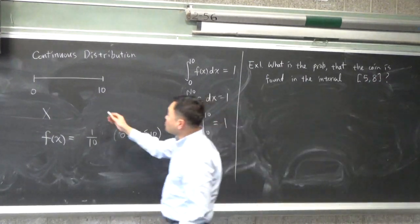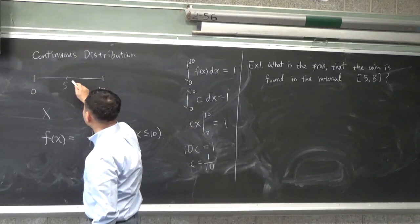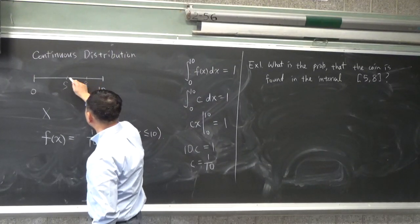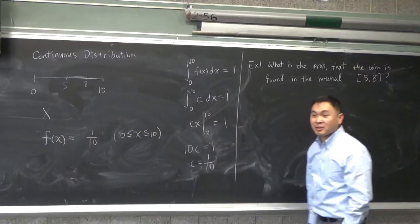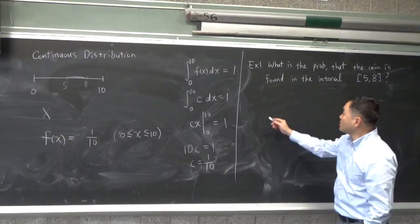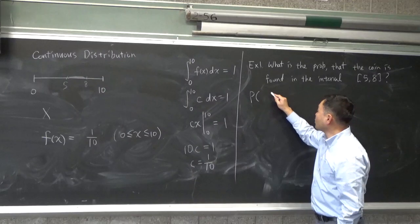So here's the midpoint 5, right? And between 5 to 8, what's the probability that the coin will be found there? And the way you calculate...